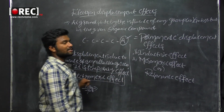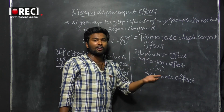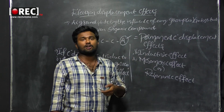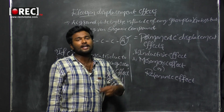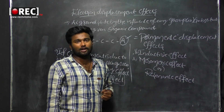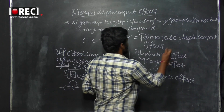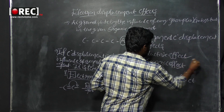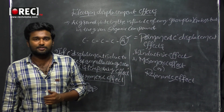To summarize: permanent effects take place when the molecule is at ground state under the influence of any group or substituent present in the given organic compound. Examples are inductive effect, mesomeric effect, and resonance effect. Temporary effects involve displacement due to an attacking reagent, and the example is electromeric effect.